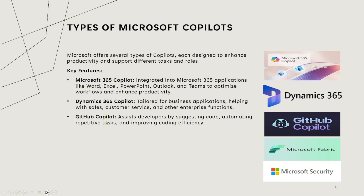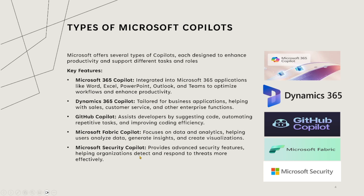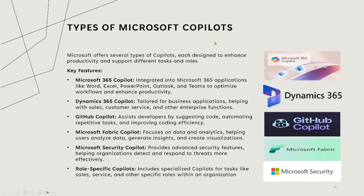GitHub, as you know, is a code repository. Microsoft has a Co-Pilot there — developers can use it to write programs in Java, .NET, Python, and many other programming languages. Microsoft Fabric is a Microsoft data platform containing databases, Power BI, analytical engine, and data engineering engine — Co-Pilot is also provided in this platform. You just pay $20 per month per user and get access, which is really useful for business analysts or data engineers. Microsoft Security platform also has Co-Pilot coverage. Role-specific Co-Pilots can also be used, like Sales and Service, which are more on the Dynamics 365 CRM or ERP side.